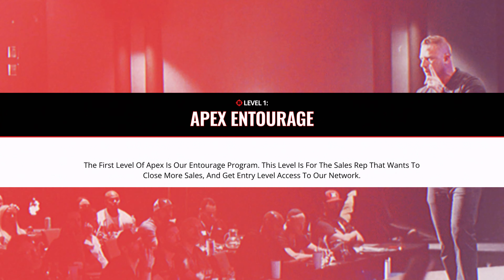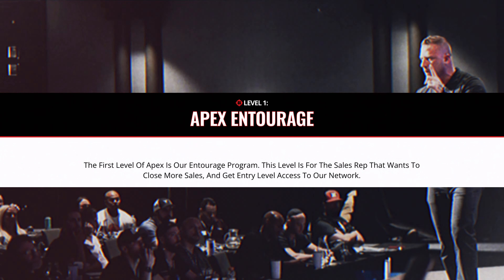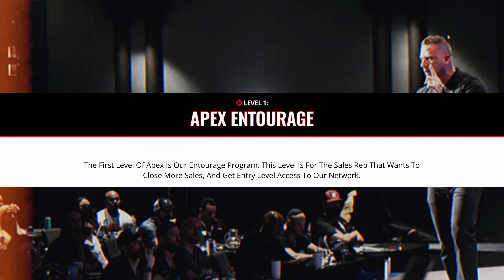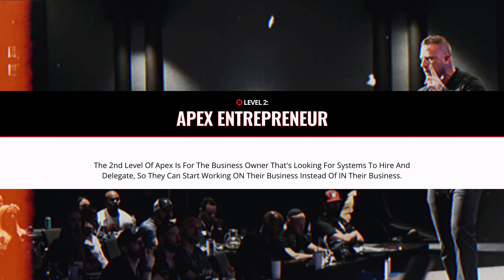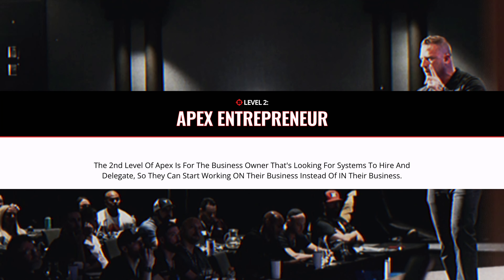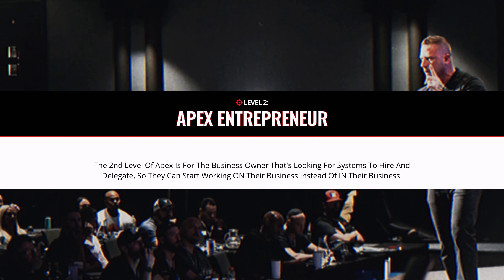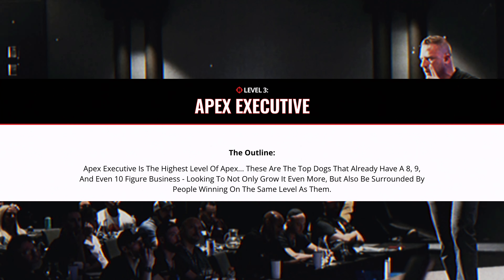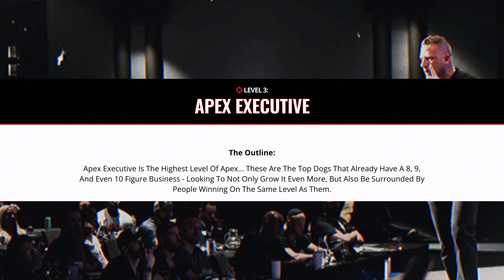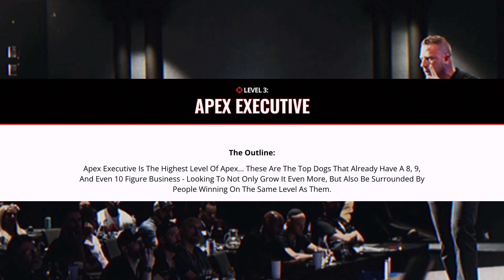Identity-based incentivization is about creating rewards or incentives that not only appeal to a person's wants and needs but also resonate with their self-concept or identity. Ryan Stuman runs a mastermind in Dallas, Texas called Apex, and he does an amazing job of leveraging this. His mastermind has three levels: Level 1 is 'Entourage' — for the sales rep who wants to close more sales; Level 2 is 'Entrepreneur' — for the business owner seeking systems to hire and delegate; and Level 3 is 'Executive' — the highest level, for people with eight, nine, and even ten-figure businesses.